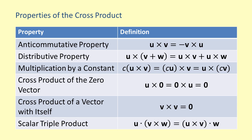The second property is the distributive property. This property states that the cross product of one vector, u, with the sum of two vectors, v and w, is equal to the cross product of u with v plus the cross product of u with w. This is a similar concept to the traditional distributive property.